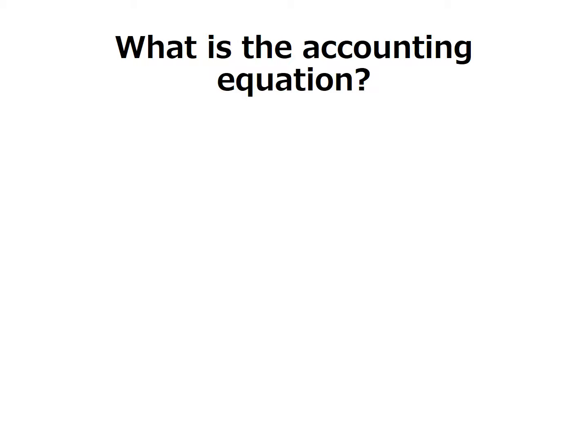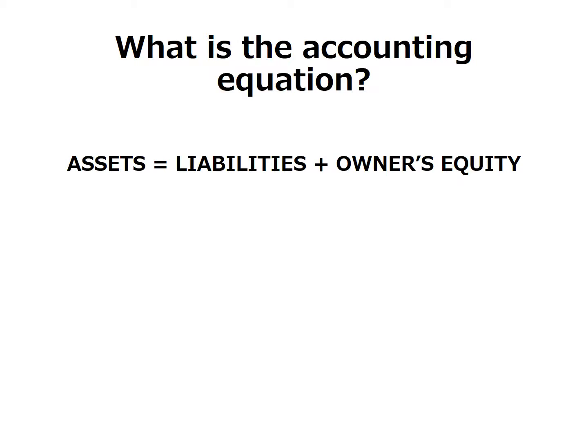The equation is called, not surprisingly, the accounting equation. The equation looks like this: Assets equals liabilities plus owner's equity. The two expressions or sides of an equation should always be equal, so total assets should always be equal to the sum of liabilities and owner's equity.